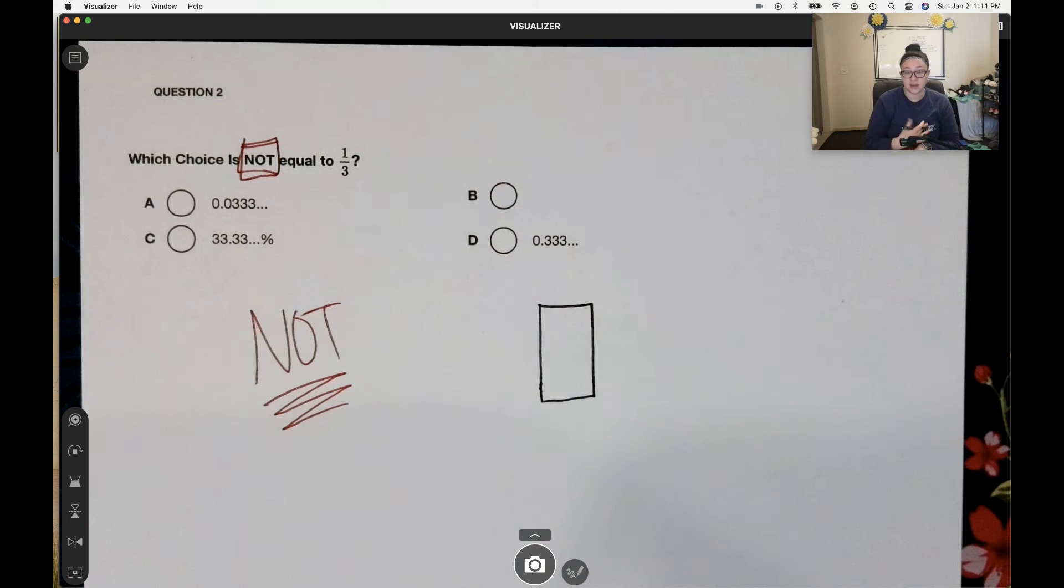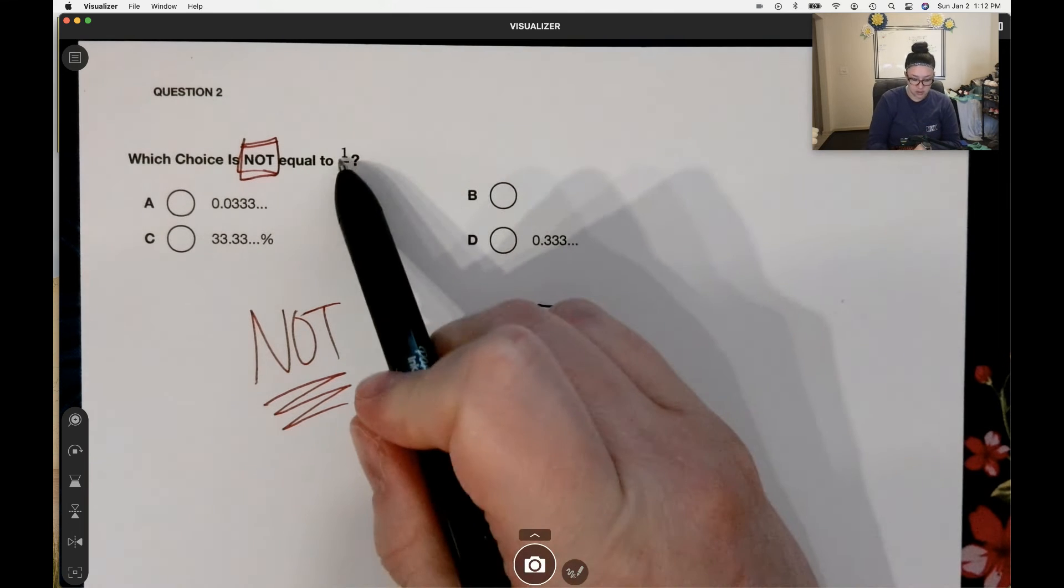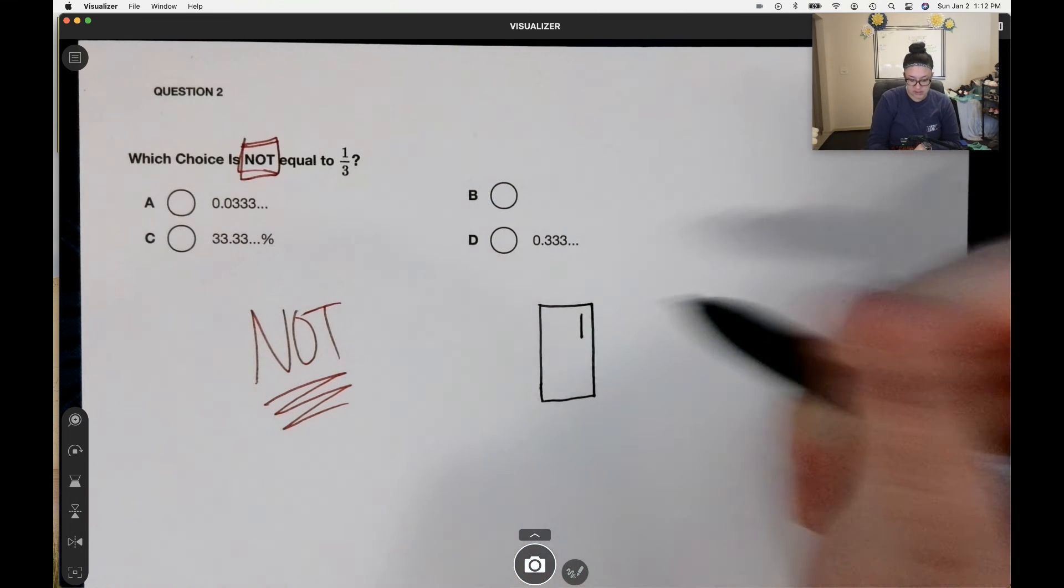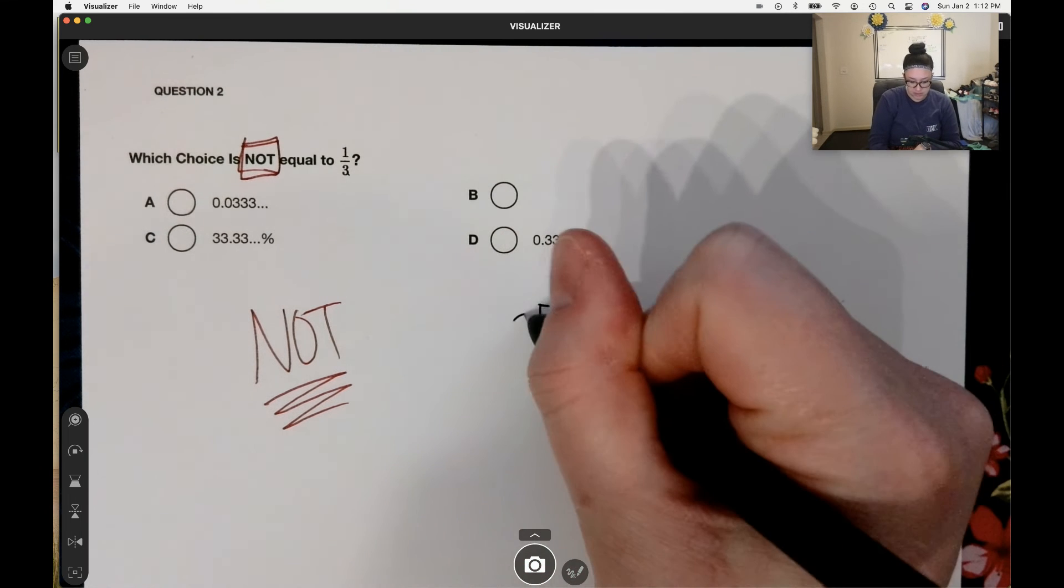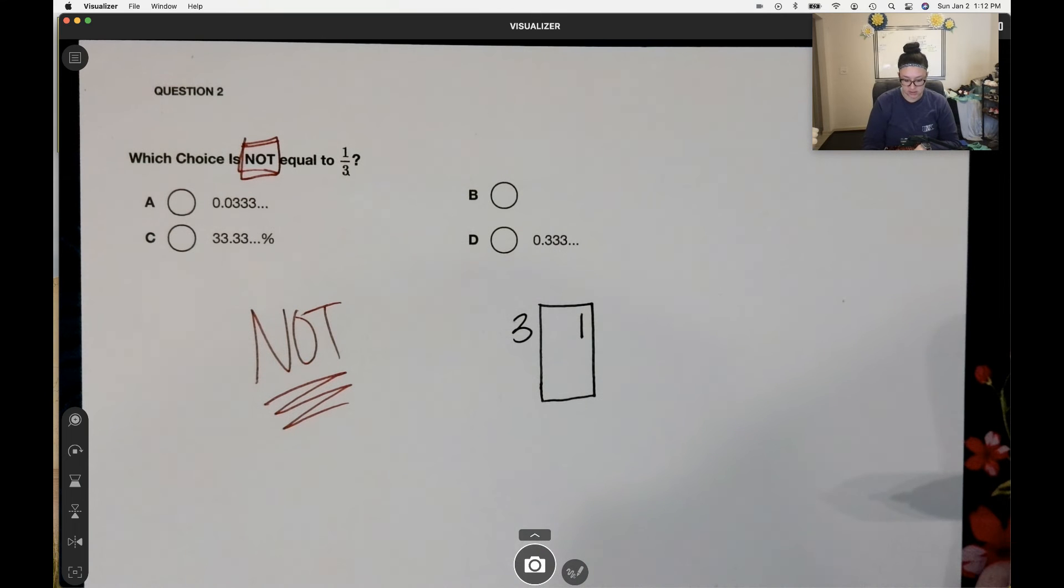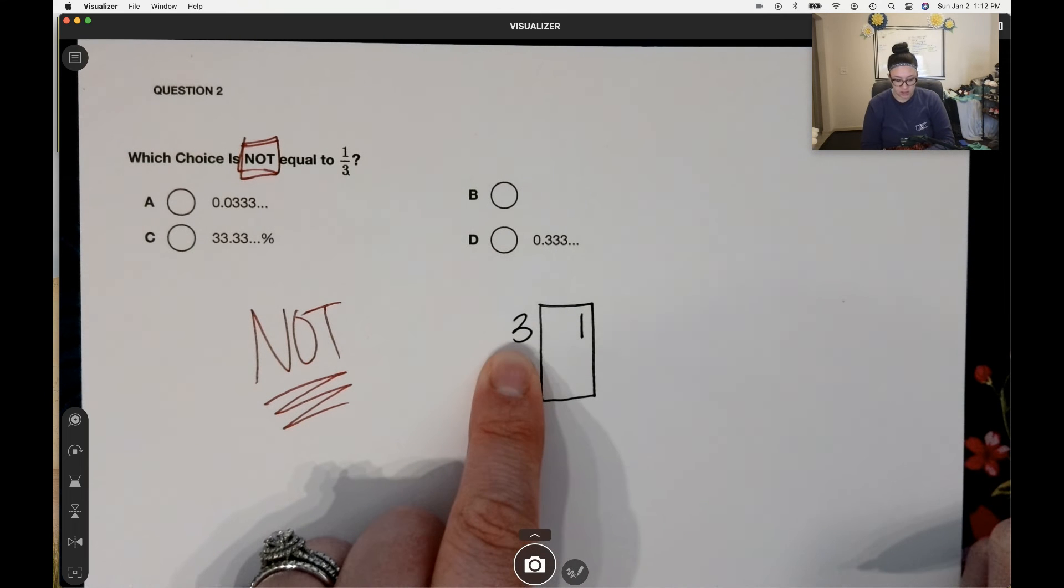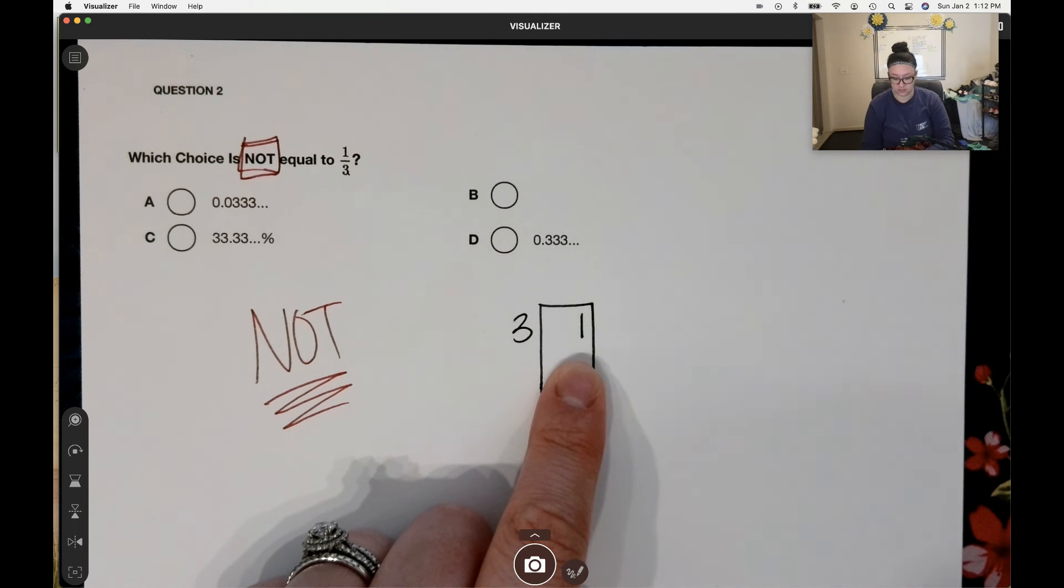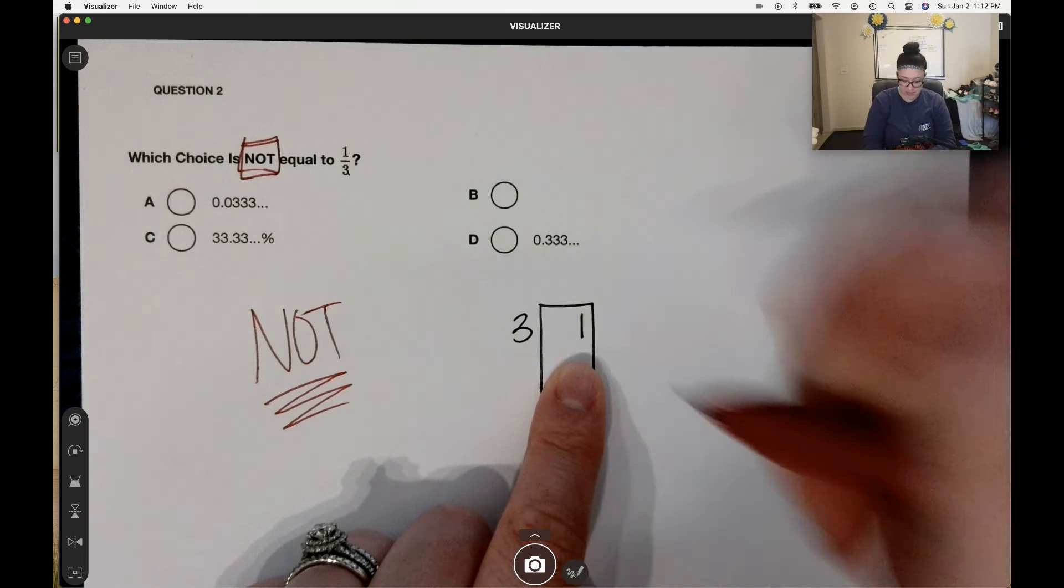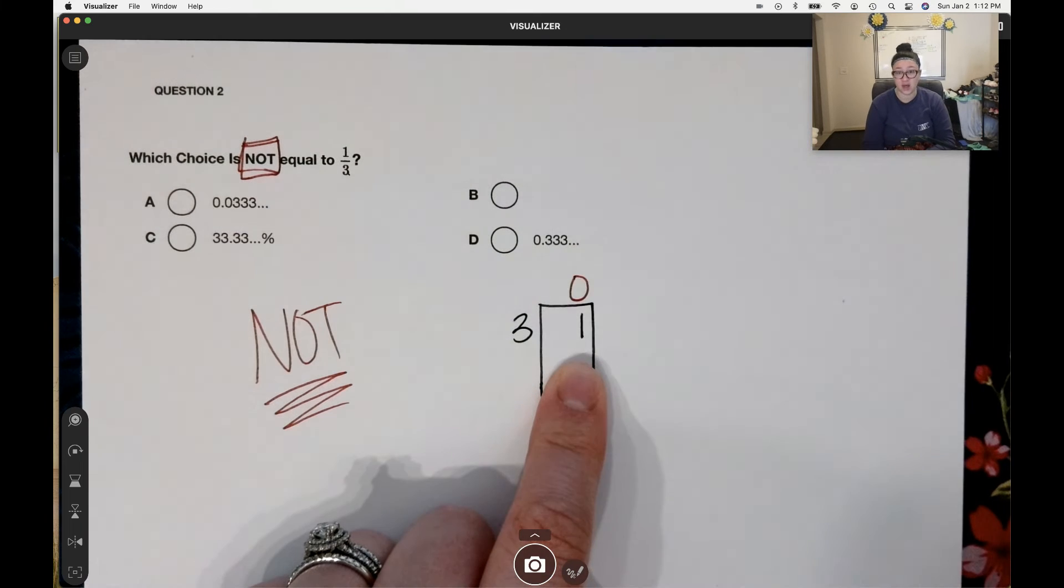Again, I'm going to use the box method because that's what most of my students use. The top number is one, it's going to go inside my box. My denominator is three, it's going to go outside my box. Can three go into one? I cannot make a group of three if I only have one thing.